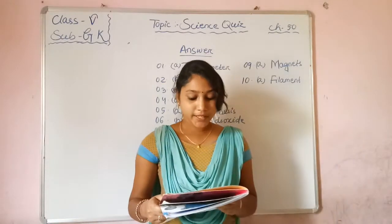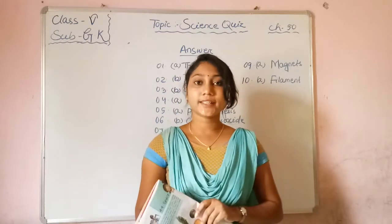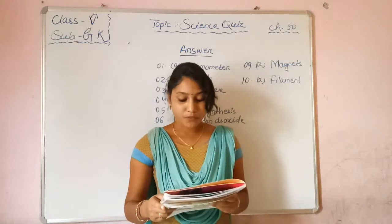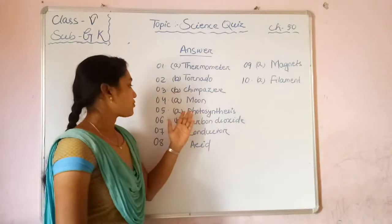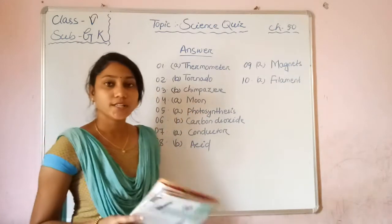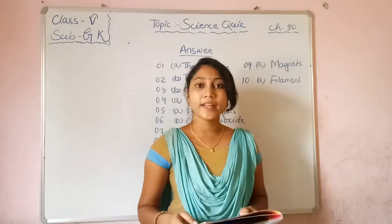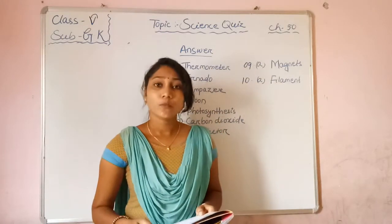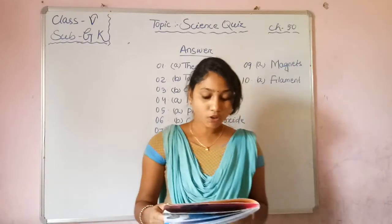Next question: Green plants make their food by? Options: Option A — photosynthesis, Option B — respiration. The correct answer is Option A — photosynthesis. Green plants make their food by photosynthesis.